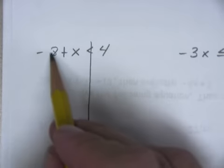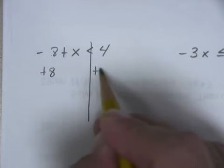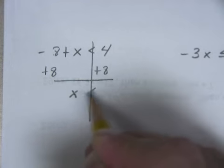When you're solving for them, to get rid of that eight I'm going to add eight. So x is less than 12.